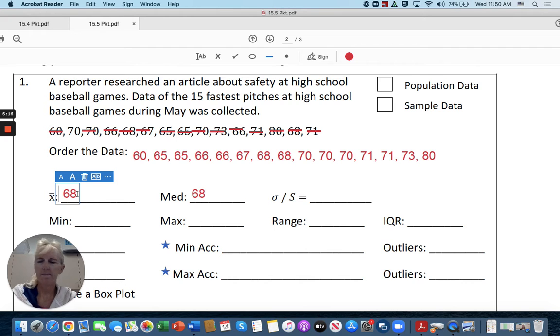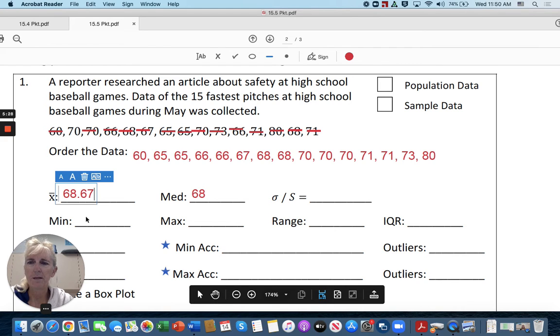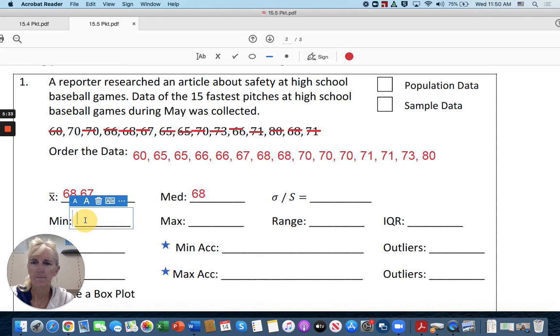Now, the mean. Add them all together on your calculator. 68.67. And then you can pause the video before I wrote that down. The minimum in the set, 60. 80. So the range is going to be 20.